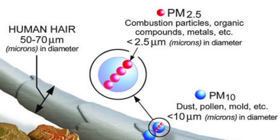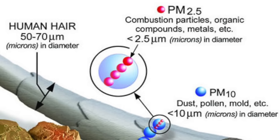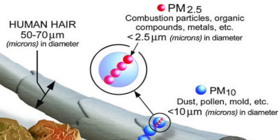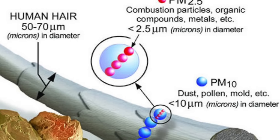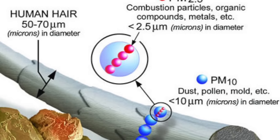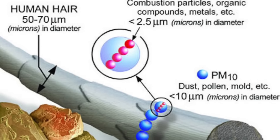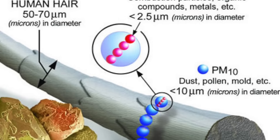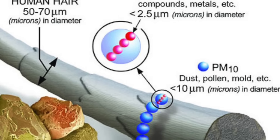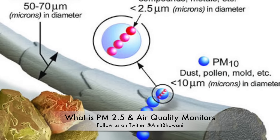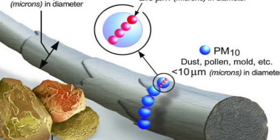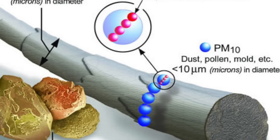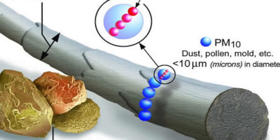PM, or particulate matter, refers to small particles found in the air that you cannot generally see with your eye. They are very small — a human hair is generally 50 to 70 microns in diameter, whereas PM 2.5 particles are around 2.5 microns, which is actually very small.